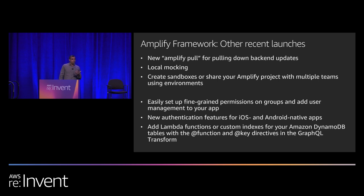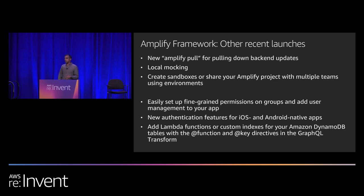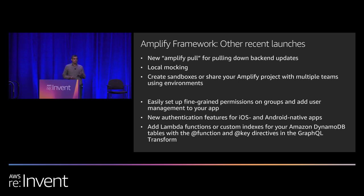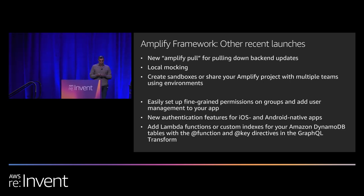We've launched a bunch of other things in recent weeks and months. The main one to highlight is the Amplify pull command, which makes it easy for developers to work in teams and pull down updates from each other. A JavaScript developer working on a back-end does Amplify push; an iOS developer can then do Amplify pull to pull down back-end definitions and run code generation to start working on the Swift application. This is an iterative workflow — these developers, even working on different front-ends, can collaborate.